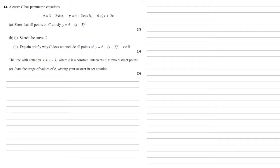So we've now got that the line with equation x plus y equals k, where k is a constant, intersects our curve C at two distinct points. State the range of values of k, writing your answer in set notation.